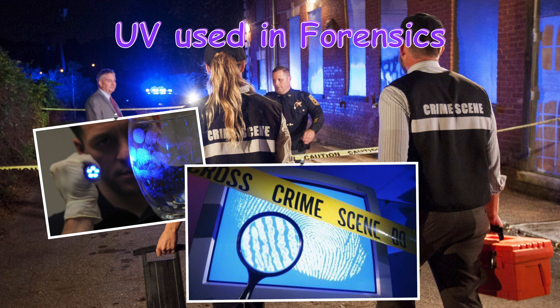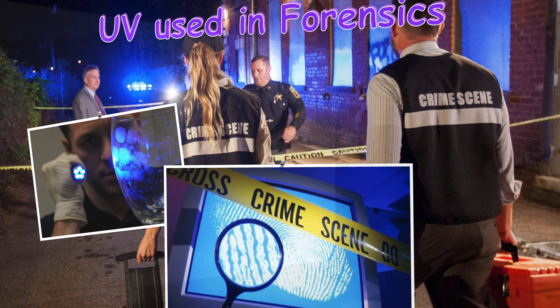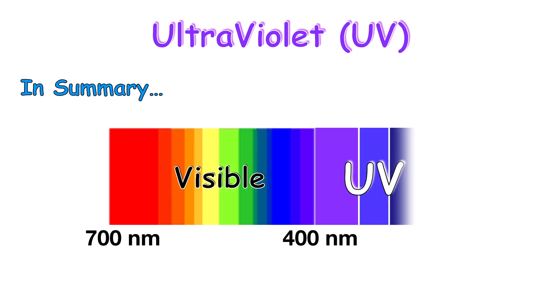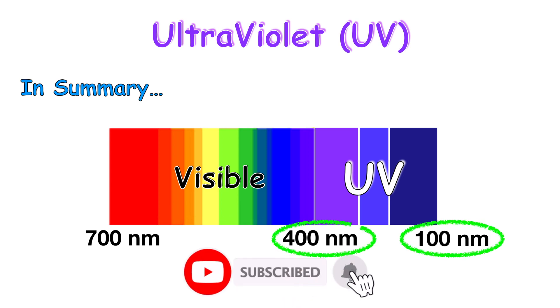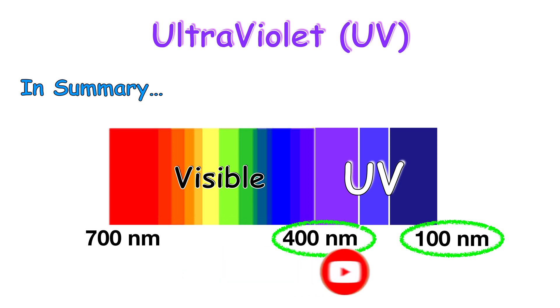In summary, ultraviolet, or UV, is light beyond the violet end of the visible spectrum, with wavelengths ranging between 100 and 400 nanometers. Thank you for watching, and don't forget to subscribe!